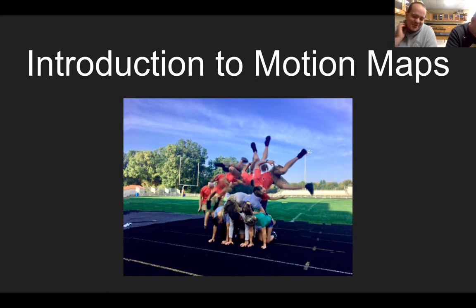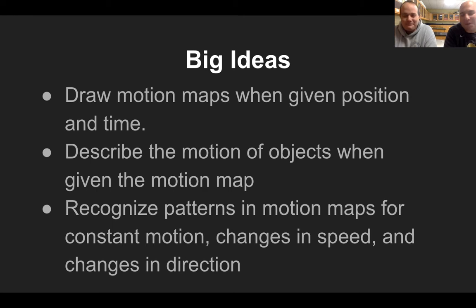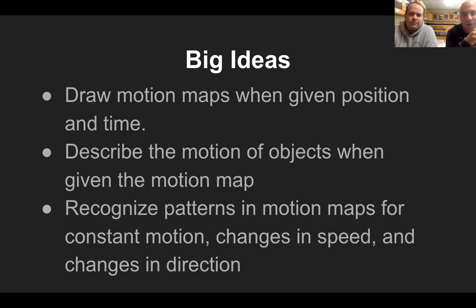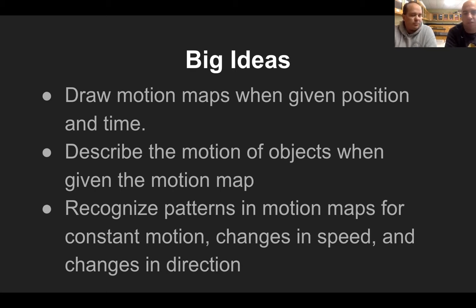So this is our introduction to motion maps, and we'll see if we can calm down and actually get through the content today. What we're going to talk about is this idea of how to represent the way an object is moving by drawing these maps that show just the position and time. We need to be able to look at a motion map, describe what's going on based on those patterns, and recognize if it's going faster, if it's going slower, and how you can determine that just from looking at this motion map.